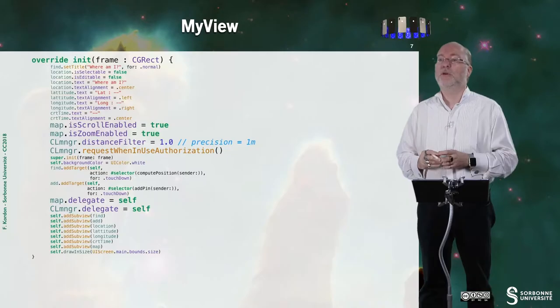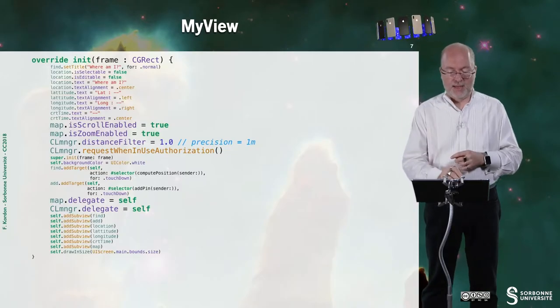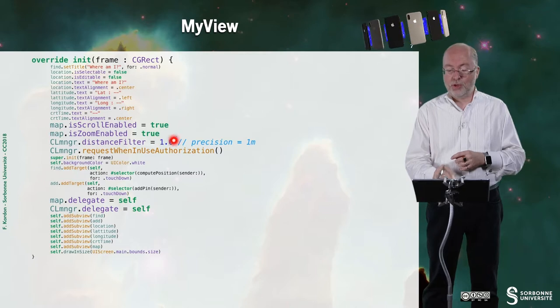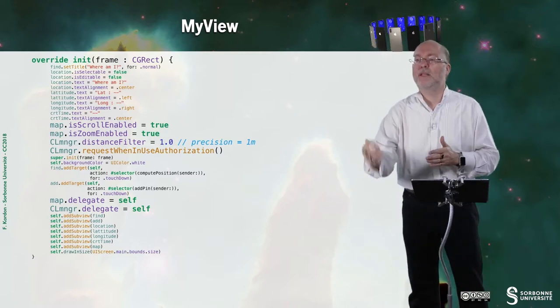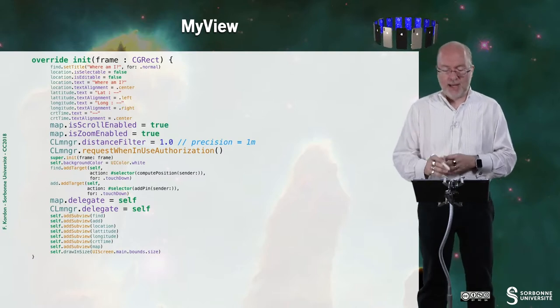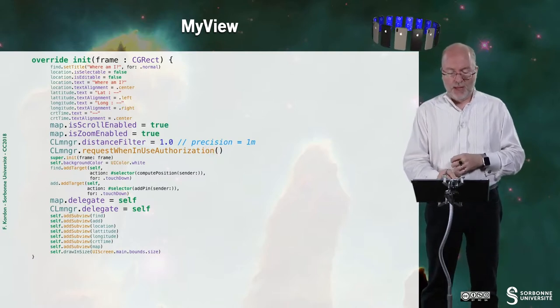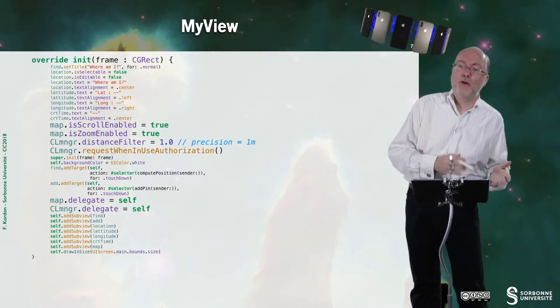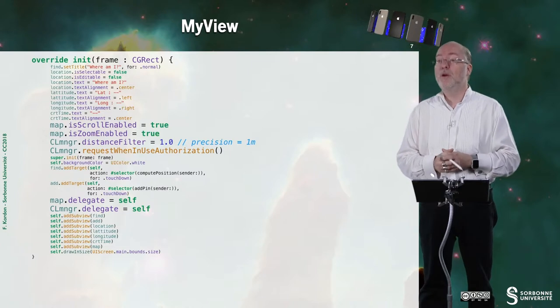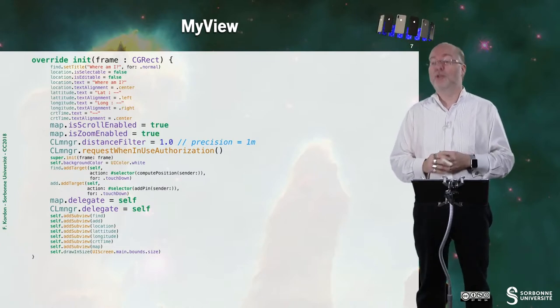I set the distance filter with a large precision. So I set that precision is one meter. And I init my core location manager. So it means that I am updated if I move one meter away from my previous position. And then I request the authorization. And I also set up self as being the delegate for the map view and also for the core location manager.